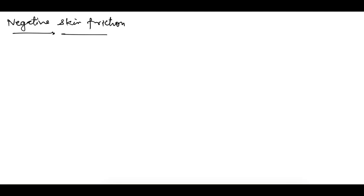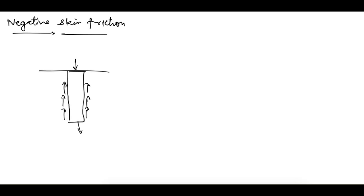Let's look at negative skin friction. We have already seen skin friction — when a load is applied on a pile, the pile tends to move downward, and due to this movement, the friction between the pile and the soil is mobilized in the upward direction, opposing the pile's movement. This is called skin friction, mobilized on the surface of the pile.